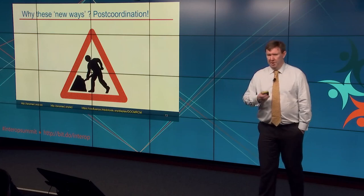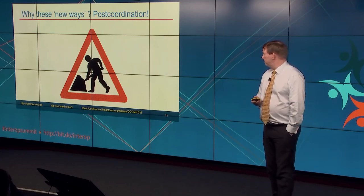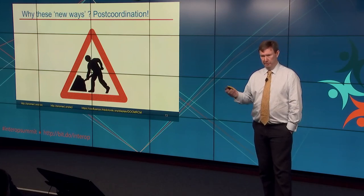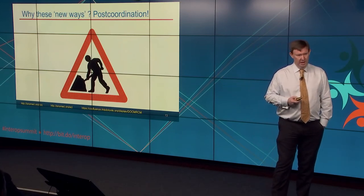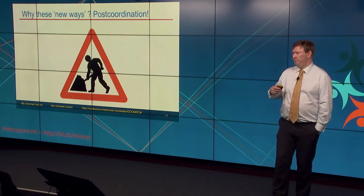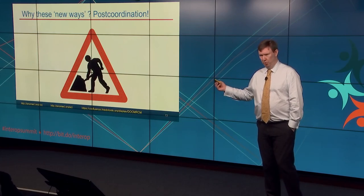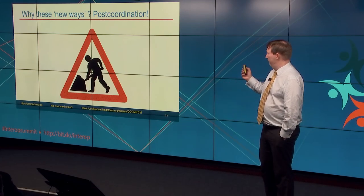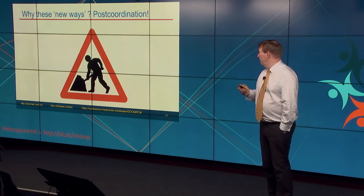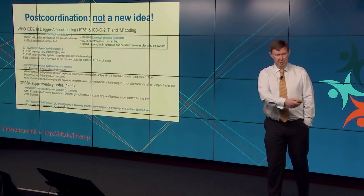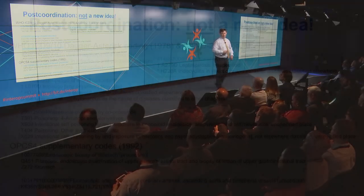So why do we have all these pieces in there that mislead people into getting the wrong codes? It's to support this notion of phrasebook and grammar — and the bogeyman word: post-coordination, which is often seen as the thing about SNOMED that's too hard. It's not a new idea and not unique to SNOMED. It's part of the design of ICD and OPCS. You've been doing it for years — just badly.